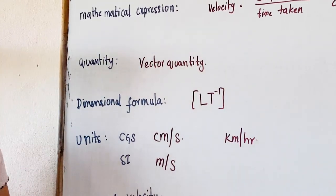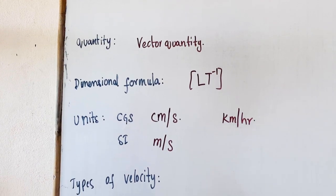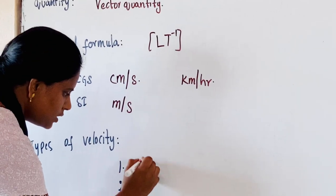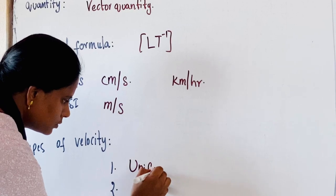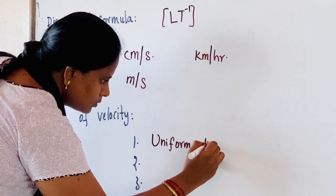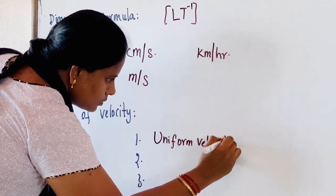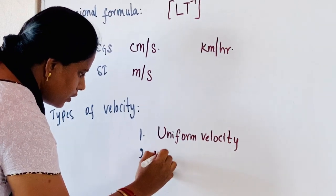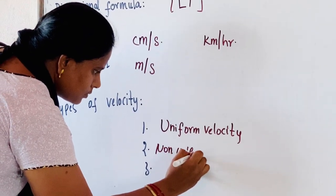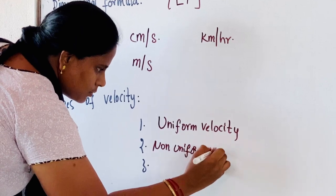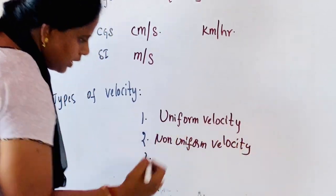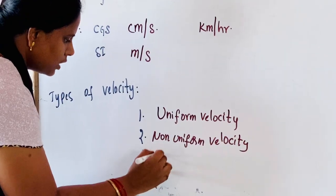Now the types of velocity we are going to see here are: uniform velocity, non-uniform velocity, and average velocity.